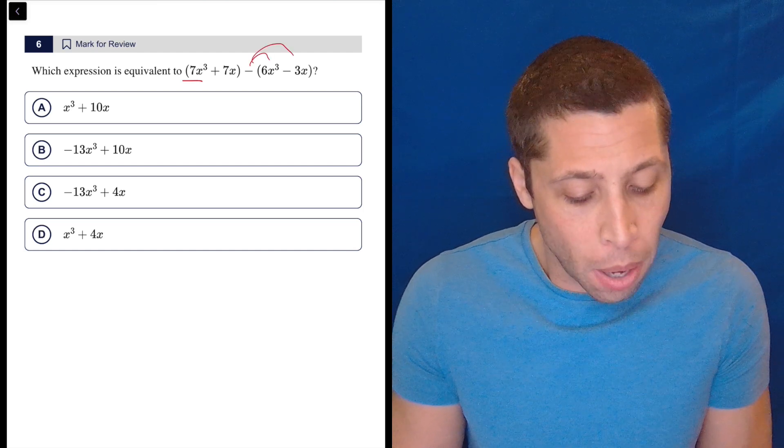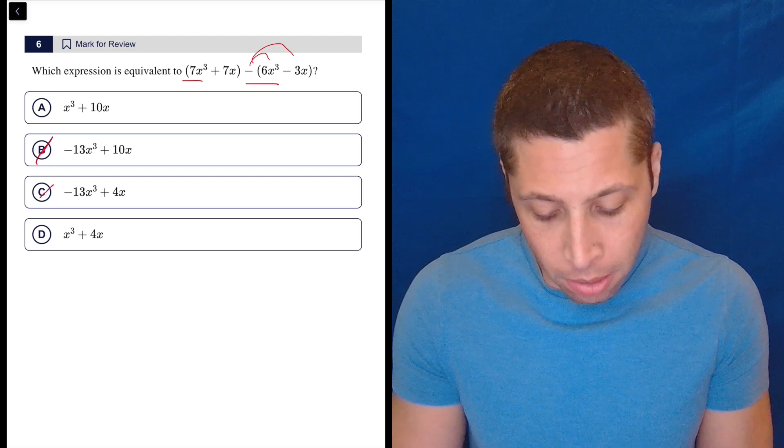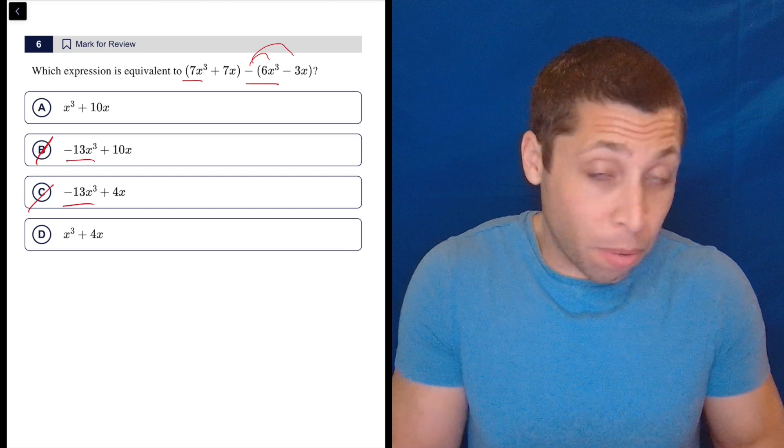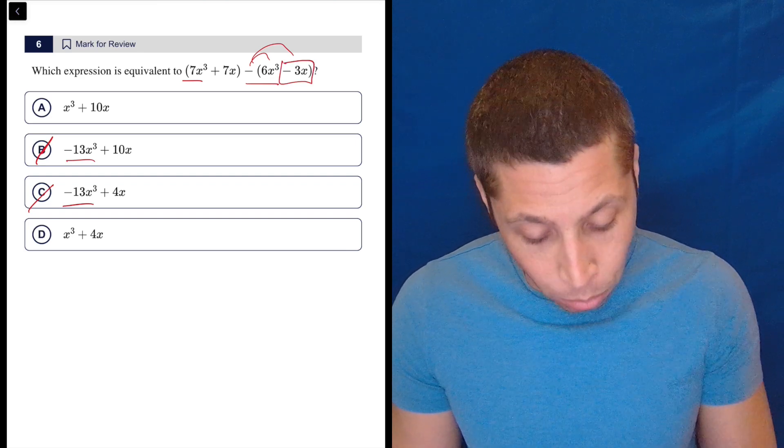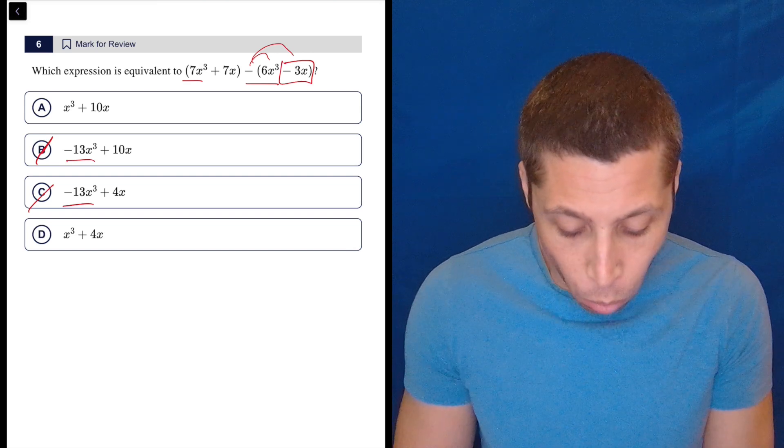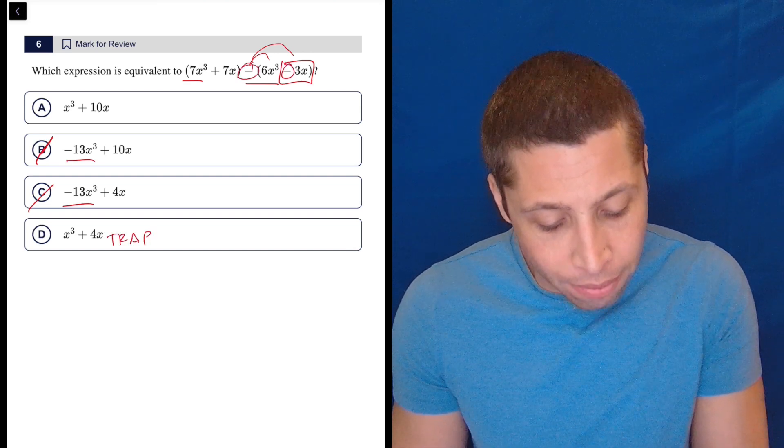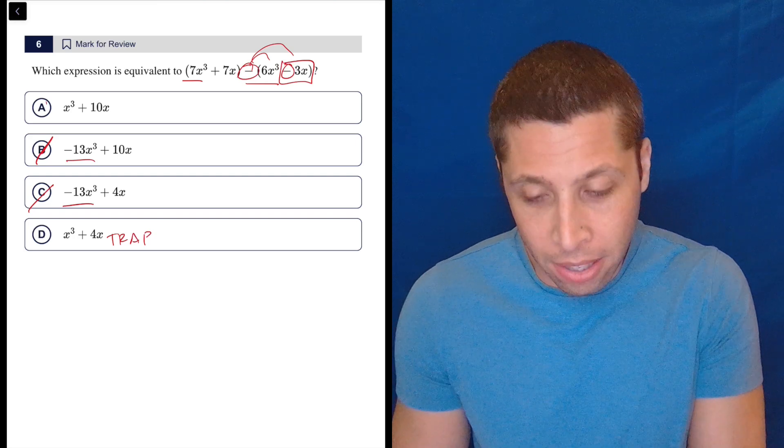So 7x³ minus 6x³ is just going to be regular x³. So that gets rid of B and C because of this. And then, people are going to mess it up. It's going to happen. You all think you're better than it, but you see this negative 3x and you do 7 minus 3 is 4, but that's our trap. We have to now add because the negatives are going to double up and make a positive. So it's 7x plus 3x, which is 10x.